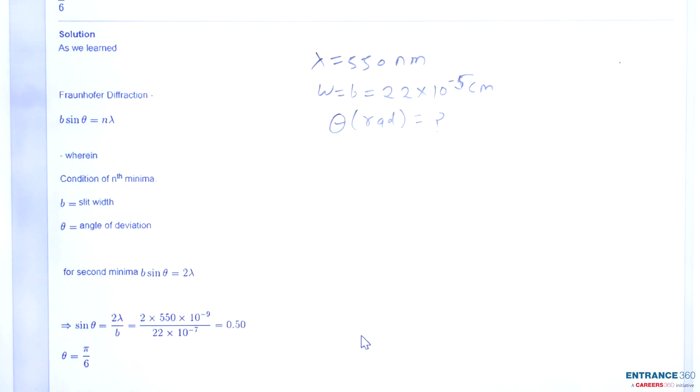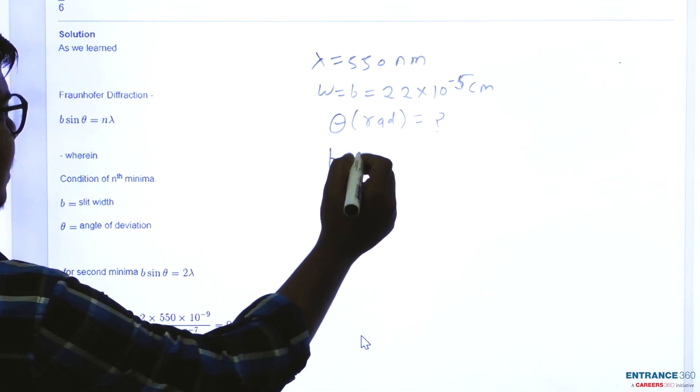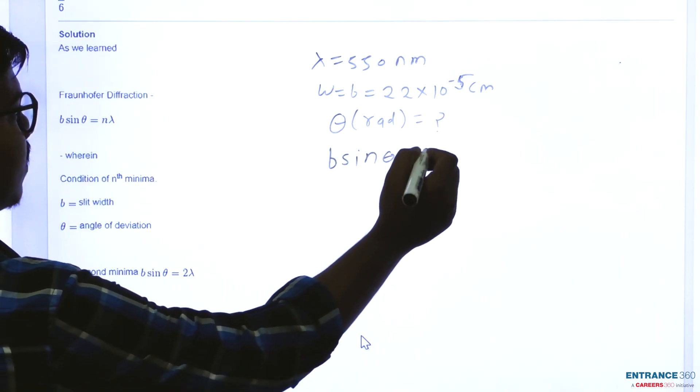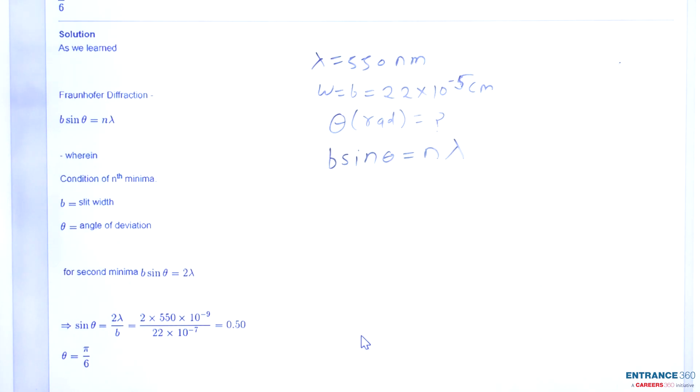To solve this question, we must understand the concept. The condition for nth minima for Fraunhofer diffraction is given as B sin theta equals n lambda, where n is the number of minima.